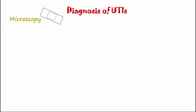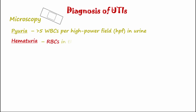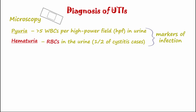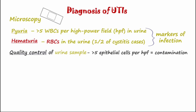Microscopic evaluation of the urine sample might reveal pyuria, defined as more than five white blood cells per high-power field. Hematuria may also be found and is present in nearly half of cystitis cases. Finally, it is equally important to establish the epithelial cell count as a form of quality control of the urine sample.